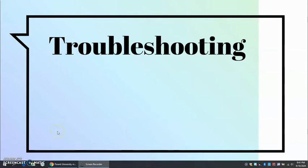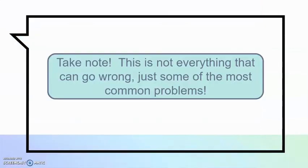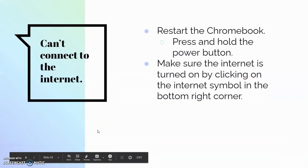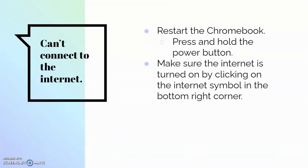Now let's get into some troubleshooting you can do to help fix things with your Chromebook that you don't need technical support for. These are the most common problems we hear about every year. First: can't connect to the internet. The biggest thing we usually see is that you need to restart the Chromebook. Pressing and holding the power button will cycle it completely off, not just log off. Make sure the internet is turned on by clicking the internet symbol in the bottom right corner — it should automatically connect unless it has been turned off.